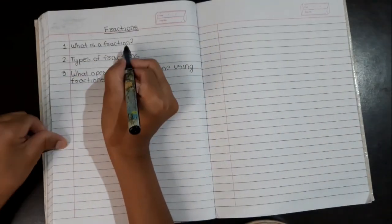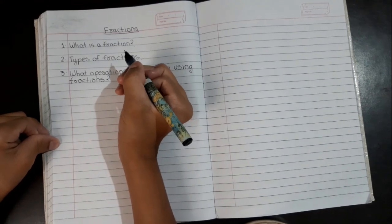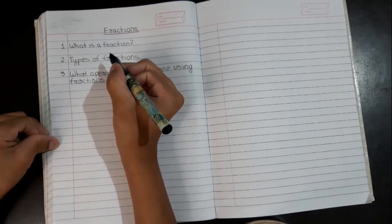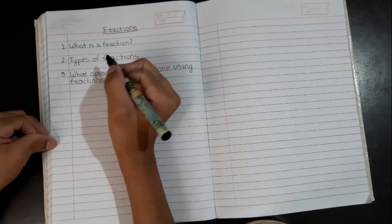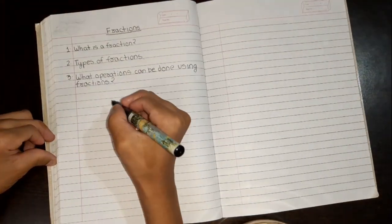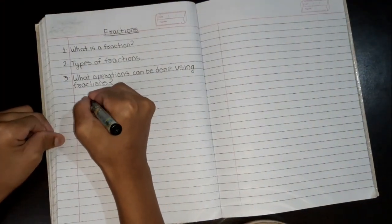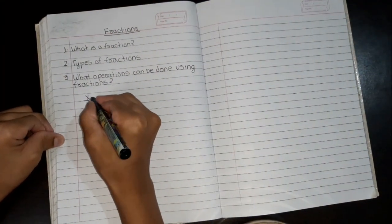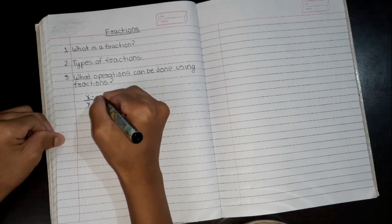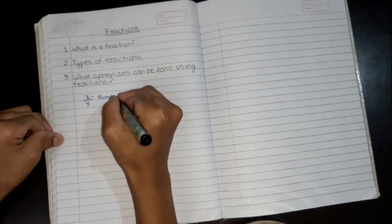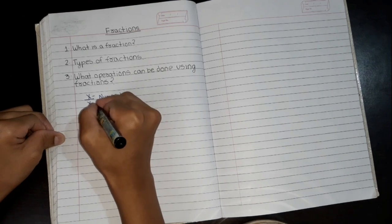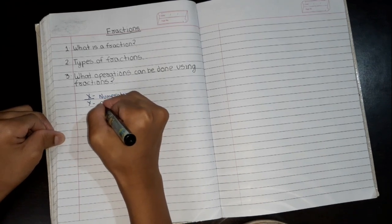So first we look into what is a fraction. I'll take an example so that it will be easier for you to understand. Let's take x by y. Here x is called as numerator and y is called as denominator.